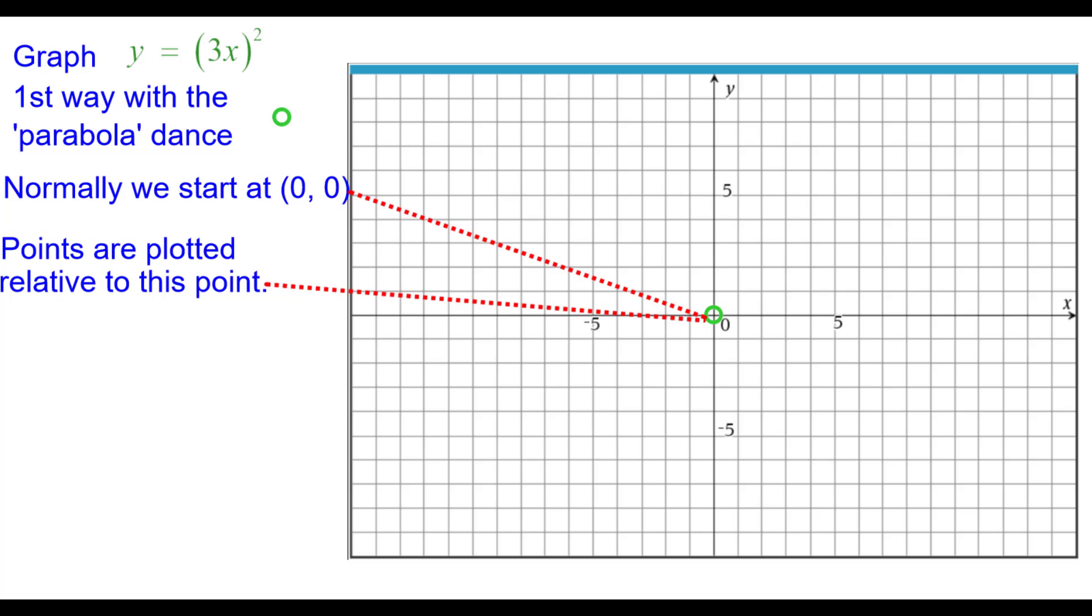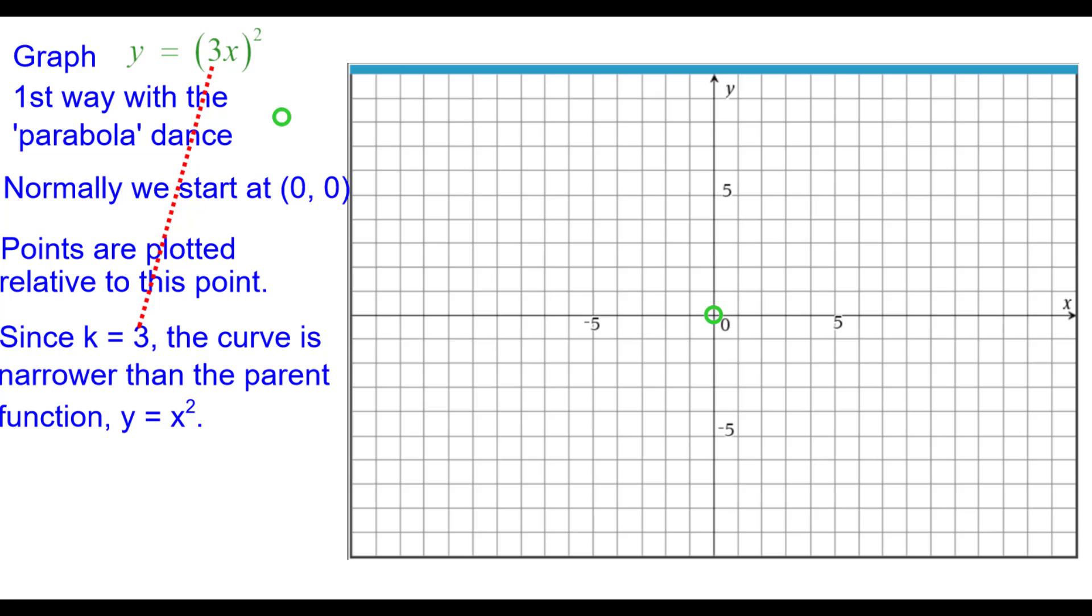Points are going to be plotted relative to this origin point. Also, since k equals 3, the curve is narrower than the parent function y equals x squared.